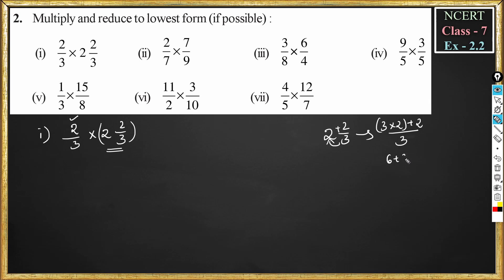This is 3 into 2 is 6, plus 2 by 3. So 2 and 2 by 3 is 6 plus 2, 8 divided by 3. So this becomes 2 by 3 into 8 by 3. Now you could multiply numerator into numerator and denominator into denominator. 2 into 8 is 16, 3 into 3 is 9. So the answer is 16 by 9. Since the common factor is 1, we cannot convert this to lowest form.